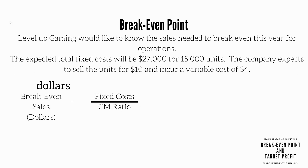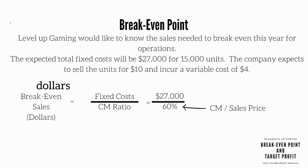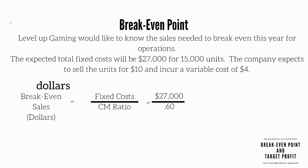Now let's look at the break-even point in sales dollars. We determine this by taking fixed costs divided by contribution margin ratio. This will be $27,000 divided by 60%. We get the 60% by taking the contribution margin divided by sales price — $6 divided by $10 — to get 60%, which can also be shown as 0.6. So we'll take $27,000 divided by 0.6 to get $45,000 to break even.